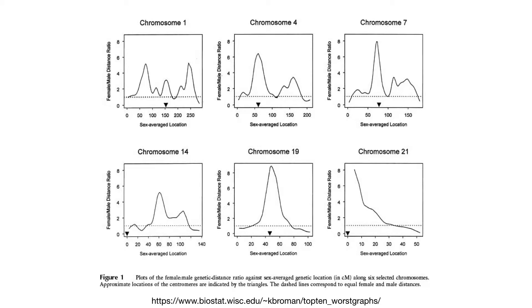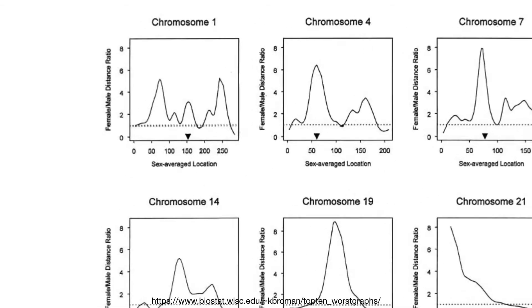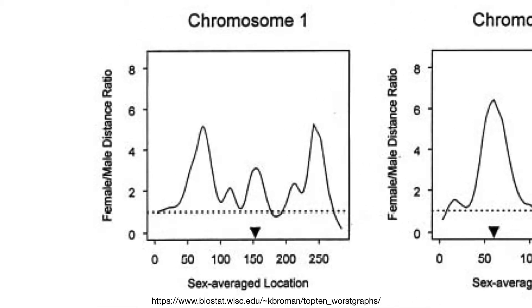So why is this data visualization one of the worst? They look okay, right? Actually, it has a serious issue. And it's that they didn't use log scale. So if you look closely, it says female to male distance ratio. So the y-axis displays a ratio. So why is that a problem? So let me explain.